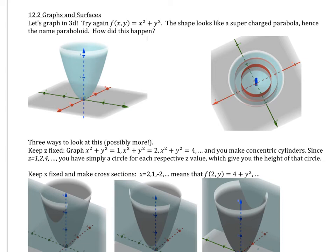Hi, this is section 12.2, multivariable. We want to look at graphs and surfaces, so we want to graph in 3D. We're going to look at f(x, y) = x² + y². You should have graphed this and tried it out — you get this shape that looks like a supercharged parabola, and we call it a paraboloid.